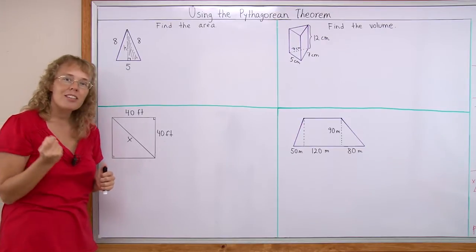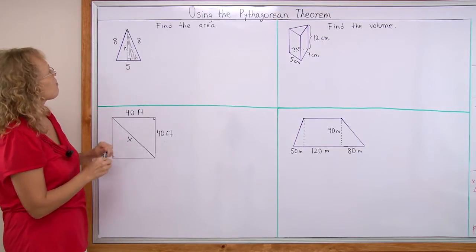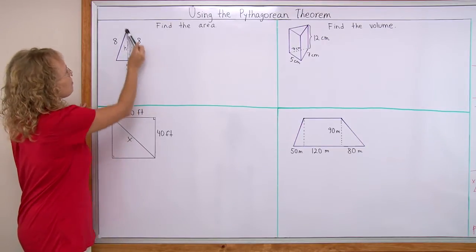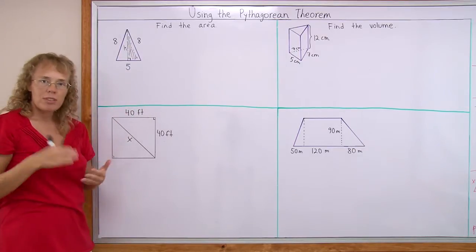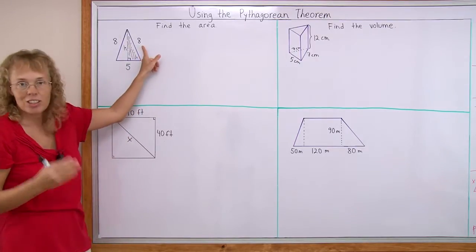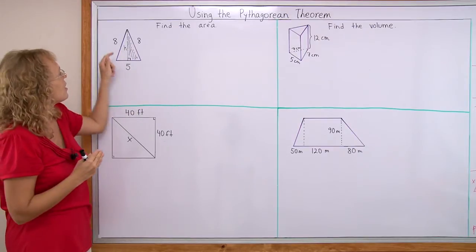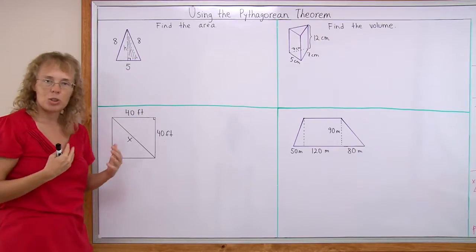We're going to use the Pythagorean theorem to figure out the height. So in this right triangle there is the hypotenuse which is 8, the longest side of the triangle. And then h and 5 are the other two sides.